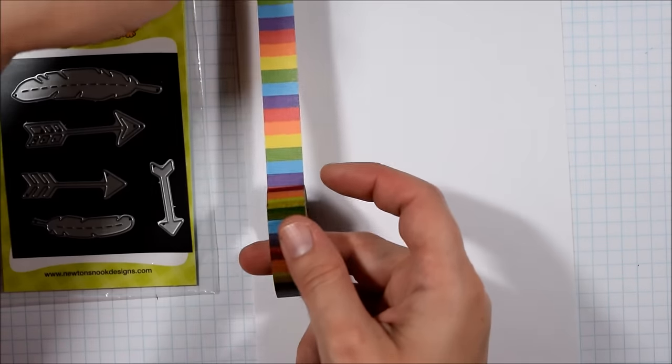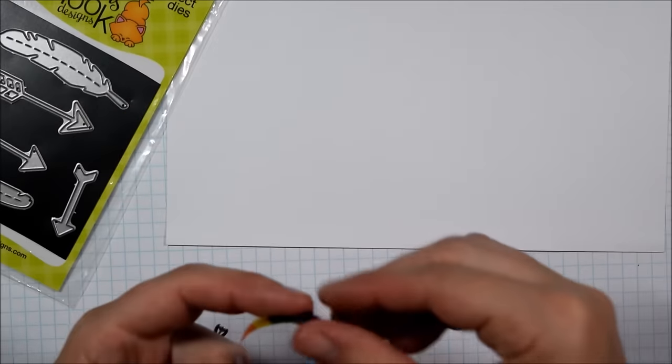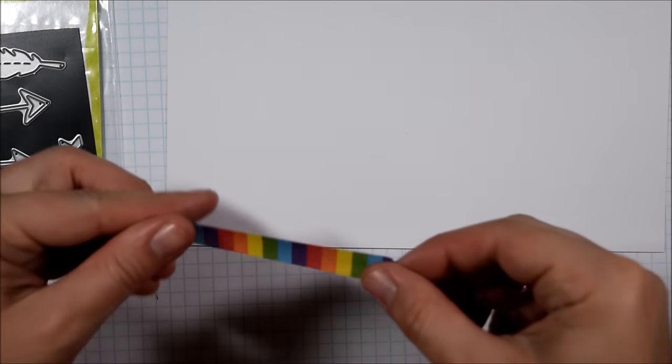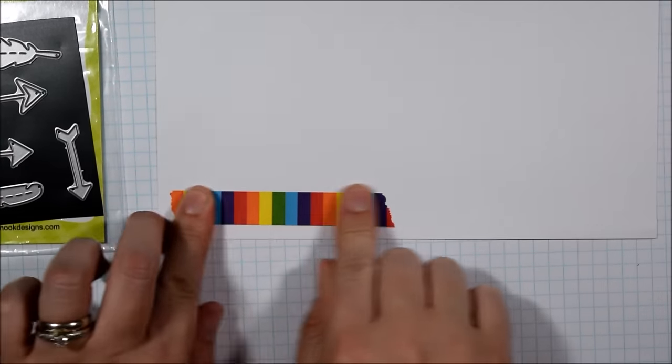So I'm starting with the Feathers and Arrows die set—that's not the official name but I will leave you a link in the video description to all of the different dies that I use as well as to the Newton's Nook Designs blog.